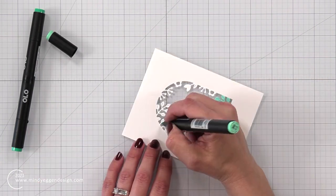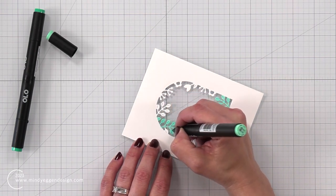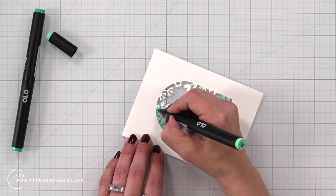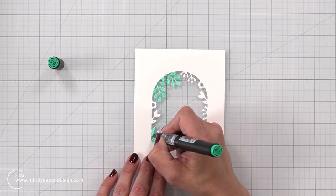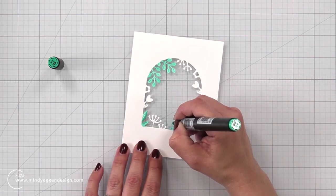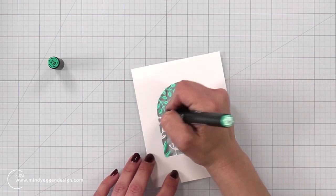The markers that I'm using today are Olo markers, which is another brand of alcohol markers, and I'm starting out with kind of like this light teal-ish color. This is BG 2.3 in the Olo markers. I colored in some of those leaf die cuts that are poking in from the window.